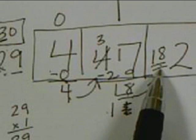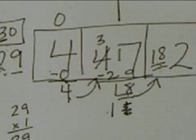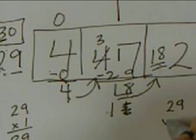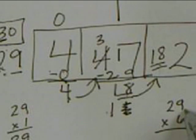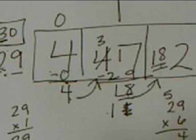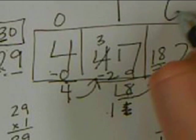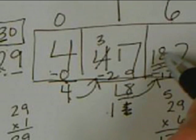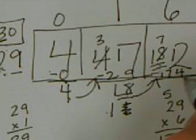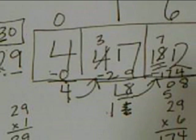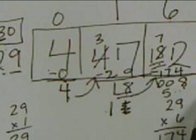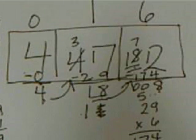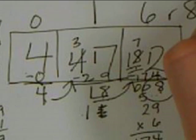We underline the first digit of our magic number and think: what times 3 will get me to 18? They should know 3 times 6 is 18. Over to the side they try 29 times 6: 9 times 6 is 54, 6 times 2 is 12 plus 5 is 17 — so 174. At the top we put a 6. Then we subtract: 12 minus 4 is 8, 7 minus 7 is 0, 1 minus 1 is 0. We have 8. 8 is smaller than 29, so our quotient is 16 remainder 8.